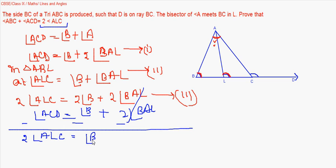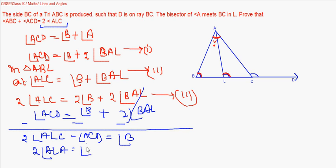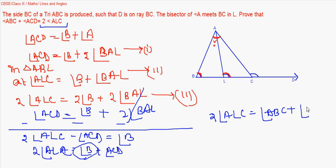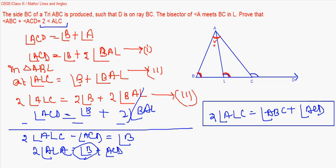Now if I subtract the first equation from this multiplied one, the two terms get cancelled, and we are left with twice of angle ALC equals angle B plus angle ACD. Angle B can also be written as angle ABC. So subsequently we get: angle ABC plus angle ACD equals twice of angle ALC, which is what we were supposed to prove.